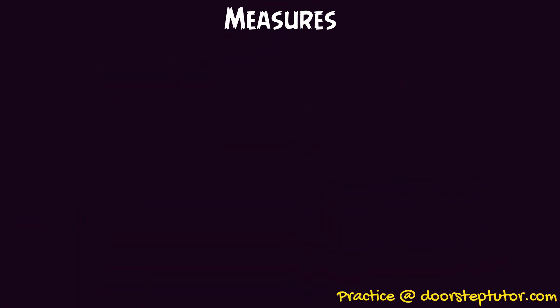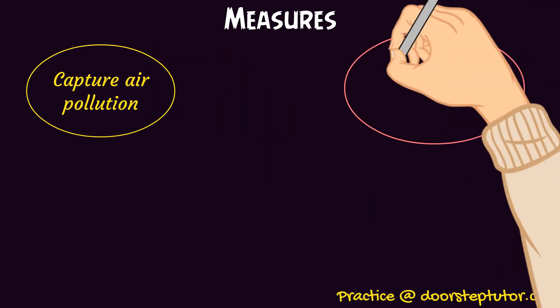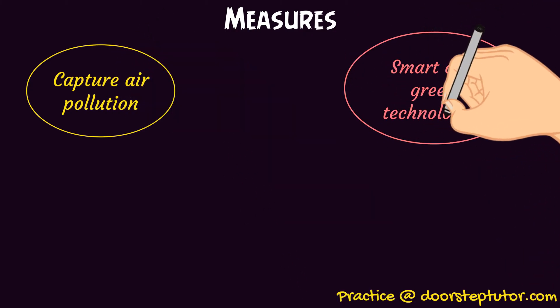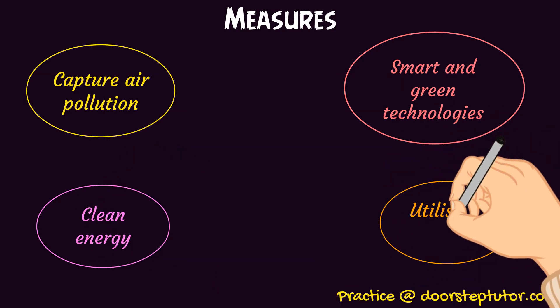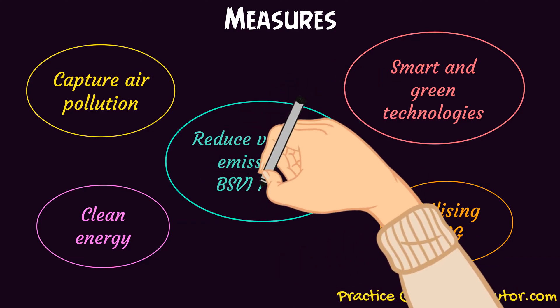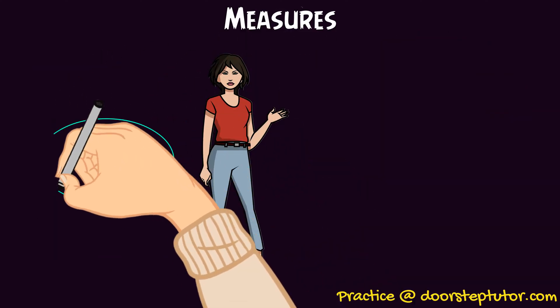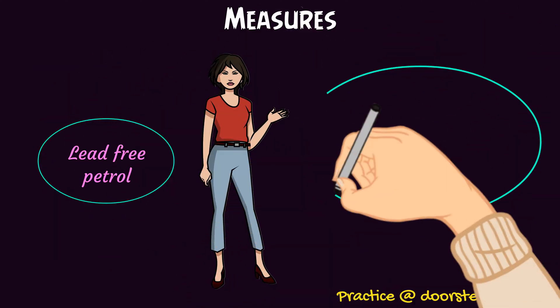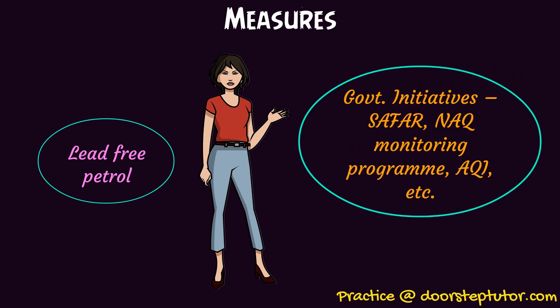What are some of the measures to control or reduce air pollution? First is capturing air pollution, adapting to smart green technologies, using clean energy, utilizing compressed natural gas, reducing vehicular emissions by adhering to BS 6 norms, using lead-free petrol. There are also some government initiatives like SAFAR, the air quality monitoring program, and the air quality index.